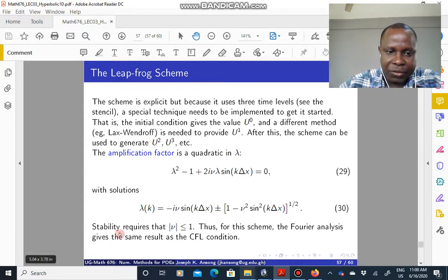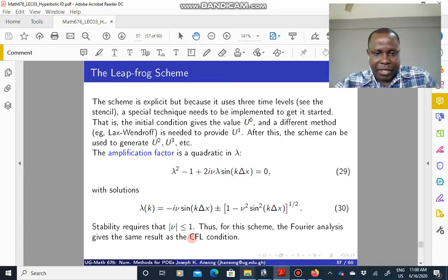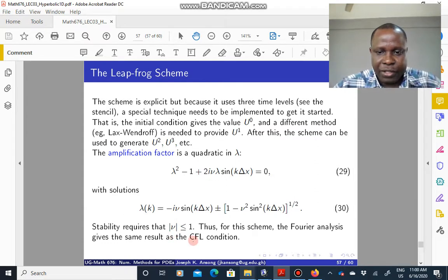Now if you analyze this, you see that the stability requires that the absolute value of nu lies between, well, it's less than or equal to 1. So nu should lie between negative 1 and 1. Which means that for this leapfrog scheme, the Fourier analysis gives the same result as the CFL condition.